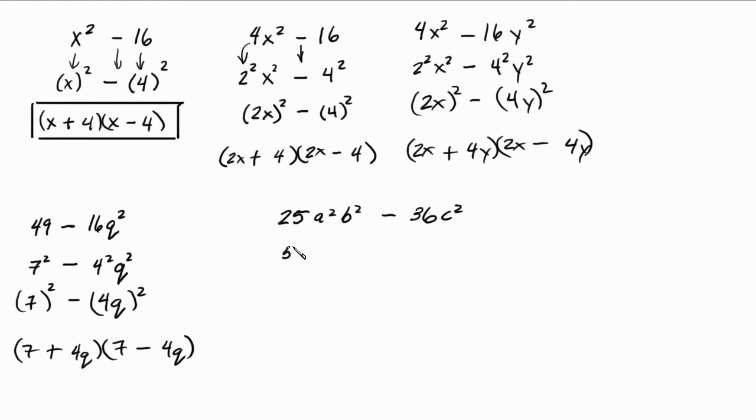Simple. This 25 can be written as 5 squared. Bring down the a squared, got my b squared there. Bring down the minus sign. 36 can be written as 6 squared, C squared is just there. Now, I'm going to combine this. 5a, they're all squared, right? So I could just write the 5, the a, and the b together and square it. Minus, bring down the minus sign. You got your 6 squared, c squared. So you could just bring the 6 and the c together and square it.